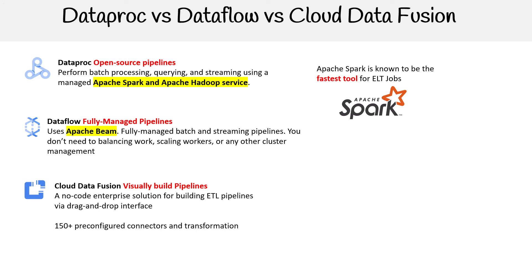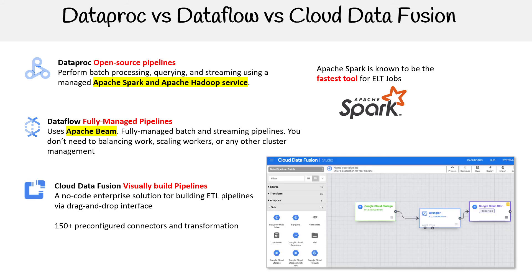Then you have Cloud Data Fusion. This is a way of visually building pipelines — a no-code enterprise solution for building data pipelines via a drag-and-drop interface. I don't think you can use this for streaming. It has 150-plus pre-configured connectors and transformations, so you just drag and drop and run it. If you're using Azure, this is similar to Azure Data Factory; on AWS, it's similar to Glue. Cloud Data Fusion probably has the highest price point.